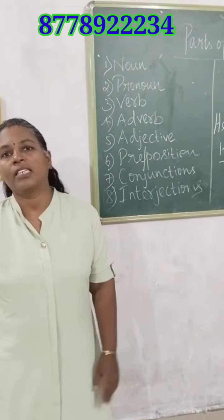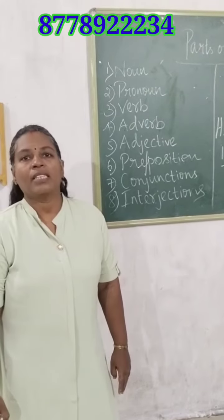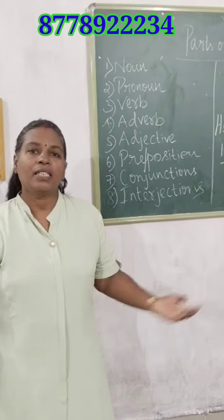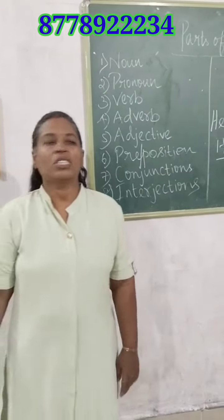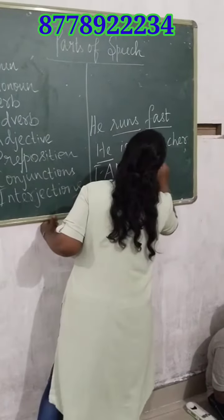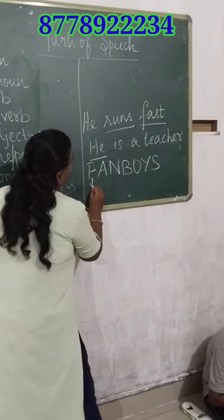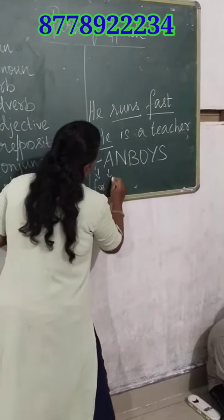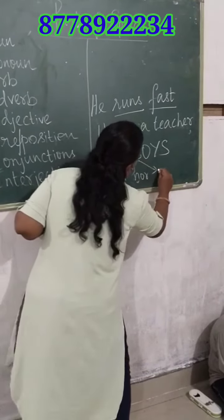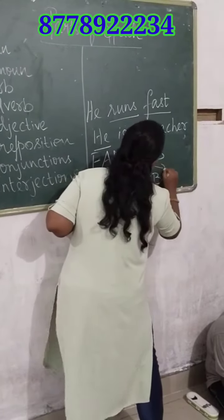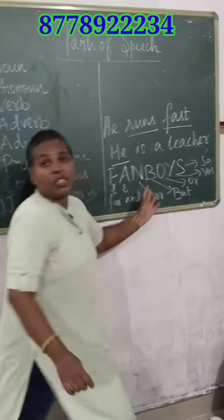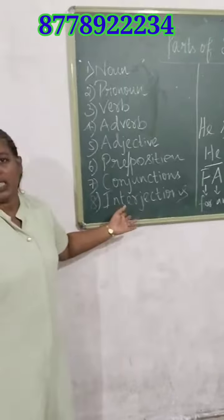Next, conjunction. Conjunction is nothing but a joining word. For example, Mala and Gita are friends. We can remember conjunctions using the acronym FANBOYS: F is for, A is and, N is nor, B is but, O is or, Y is yet, S is so. These are all examples of conjunctions.